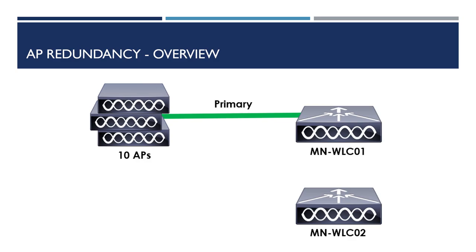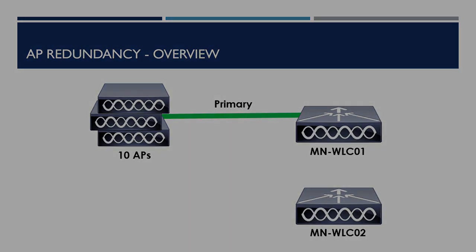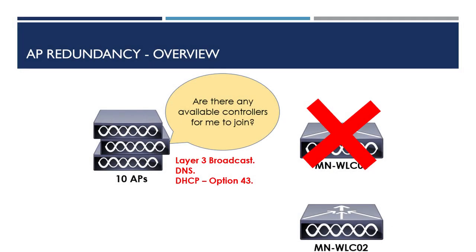There's one problem though — how will our APs know how to join WLC02 if WLC01 fails? They could go through the AP discovery process using the standard methods of Layer 3 Broadcast, DHCP option 43, or even DNS. There's one problem with this though: our 10 APs will be disconnected from a controller for a significant amount of time while they discover and join our redundant wireless controller. This isn't very efficient.